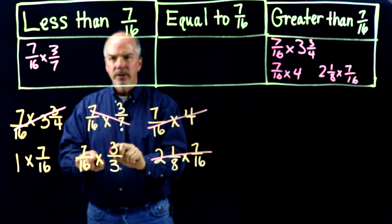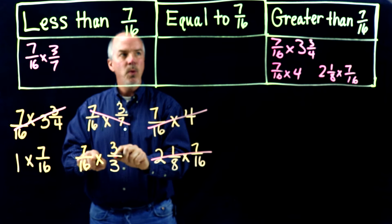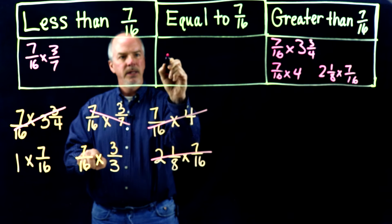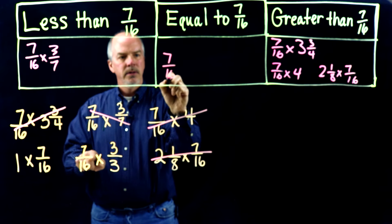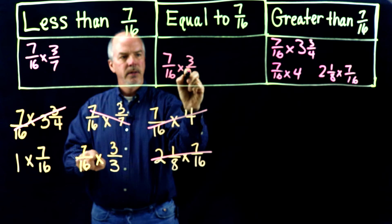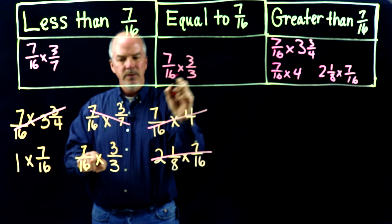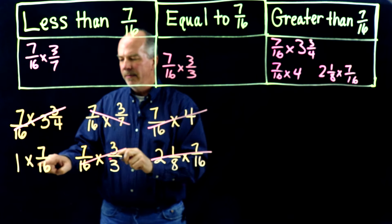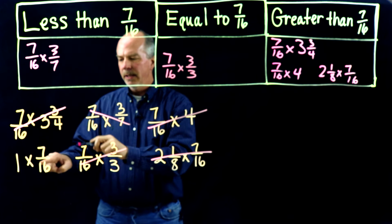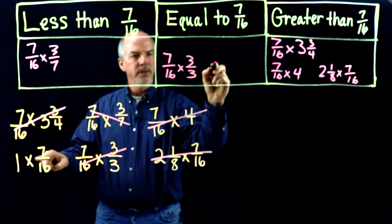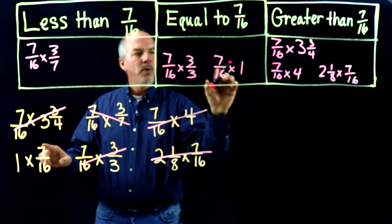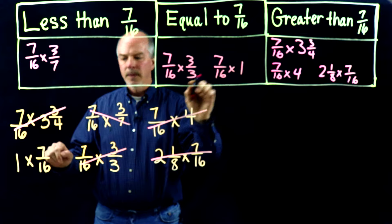7 sixteenths times 3 over 3 — well, 3 over 3 is 1, so anything times 1 is itself, so 7 sixteenths times 3 over 3 will equal 7 sixteenths. It will be the same. And 1 times 7 sixteenths — that's going to be the same thing also. 7 sixteenths times 1: my product will be the same.